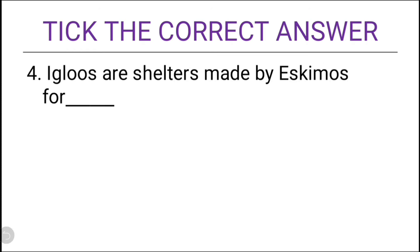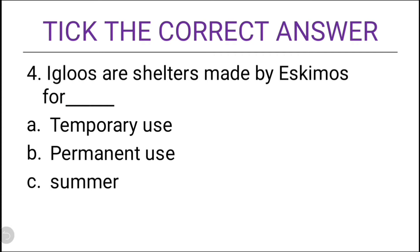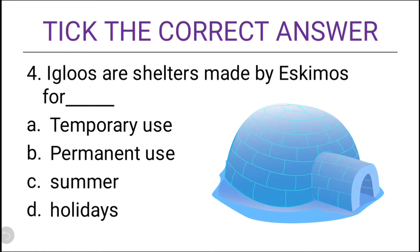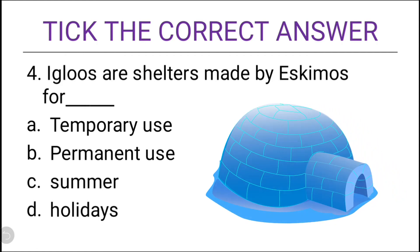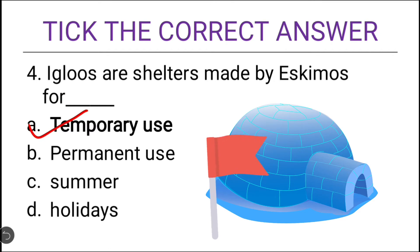Fourth question: igloos are shelters made by Eskimos for — options are temporary use, permanent use, or summer holidays. The answer is temporary use. The igloos are the shelters made by Eskimos for temporary use.